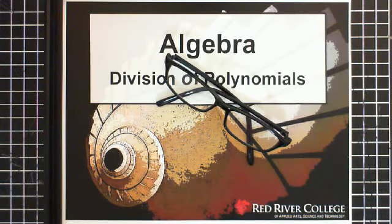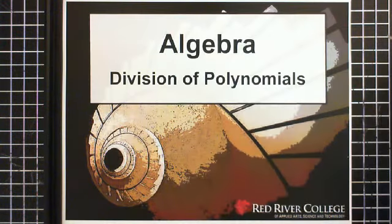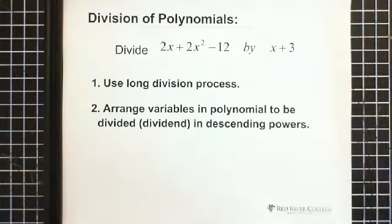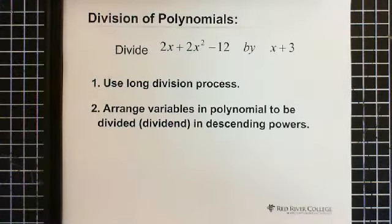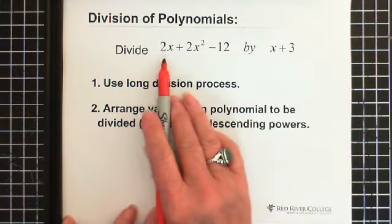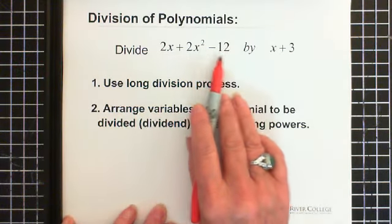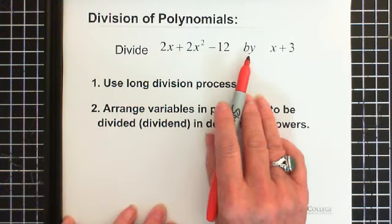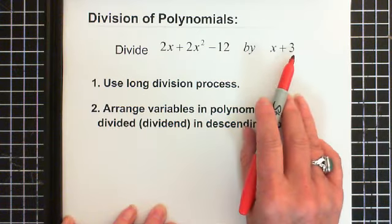Welcome to Wiseguys. This video is on the division of polynomials. We're just going to walk through it step by step. When you have the division of polynomials, you have a question that looks something like this: divide 2x plus 2x squared minus 12 by x plus 3.